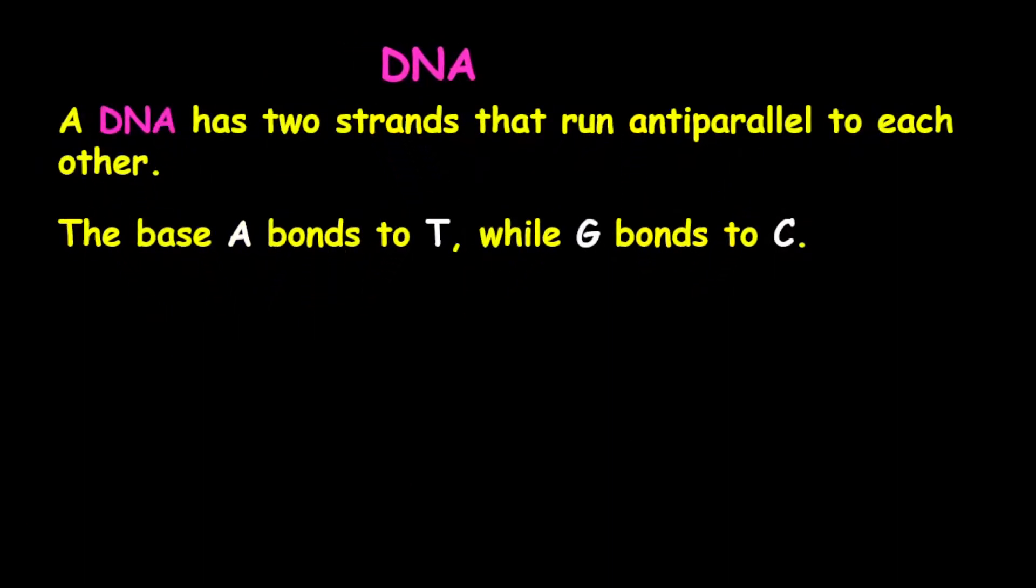Note, a DNA has two strands that are in a double helix fashion, and they run anti-parallel to each other. The nitrogen bases that are found in DNA include A, T, G, and C.